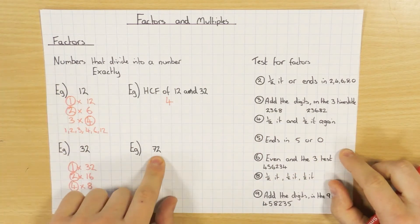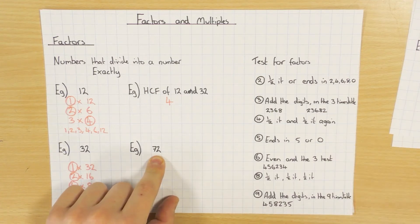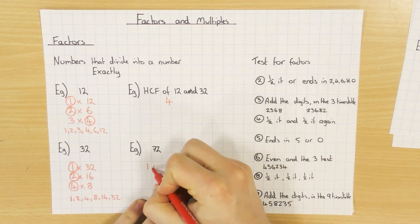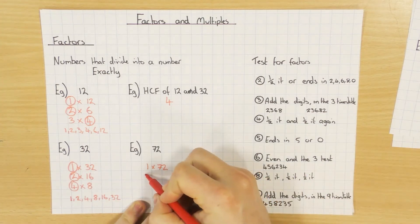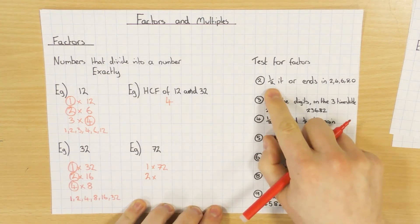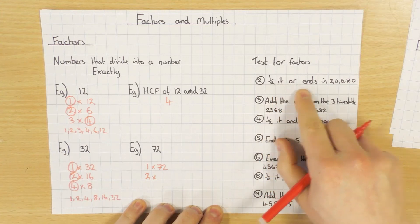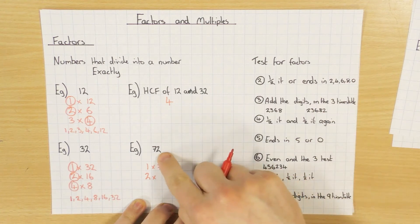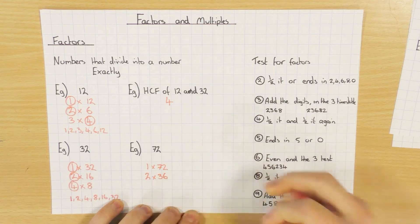Now let's look at 72 — a slightly bigger number with more factors, so we have to be careful. I've got a few tricks to help us on the right-hand side here. Always start off with the obvious ones: 1 times 72. Next thing to test is 2. The little test you can do: if it ends in a 2, 4, 6, 8 or 0 — in other words if it's even — then 2 will definitely be a factor. This number is even, so yes, 2 is definitely a factor. 2 times what? Well if I half it I get 36, so 36 is a factor.